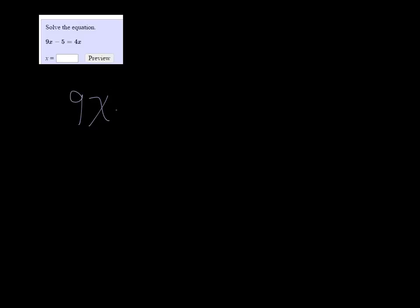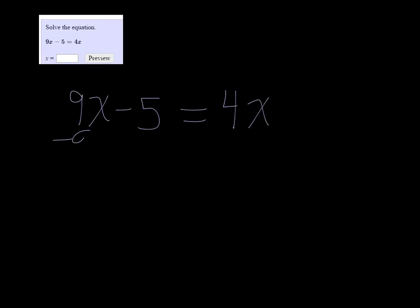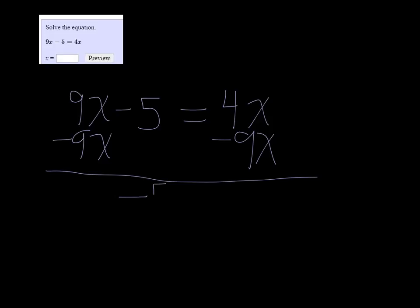Solve the equation 9x minus 5 equals 4x. I have a variable on both sides of the equation, so I'm going to subtract 9x on both sides so that I only have a variable on one side and then a plain old number on the other.